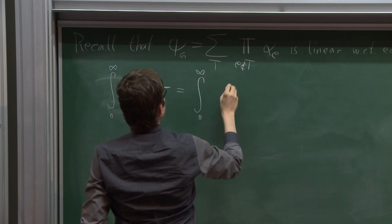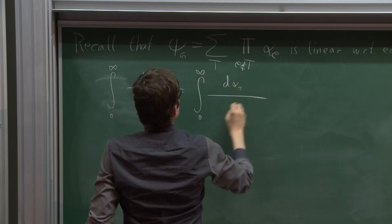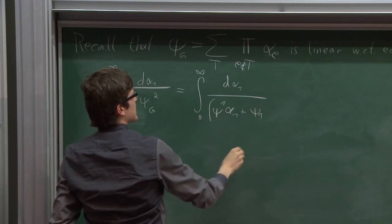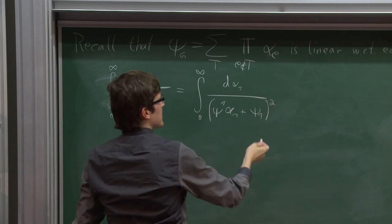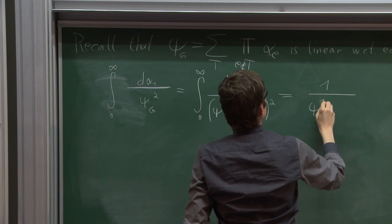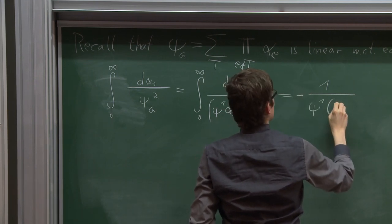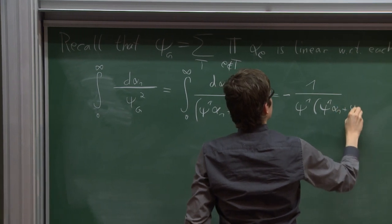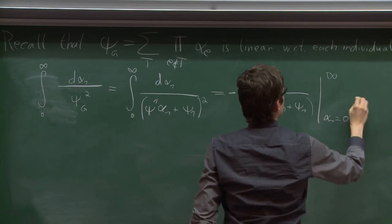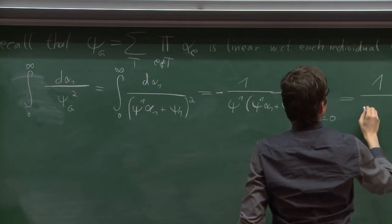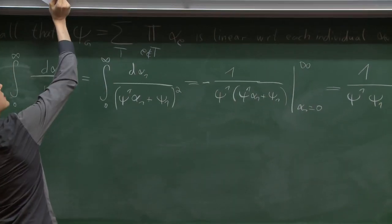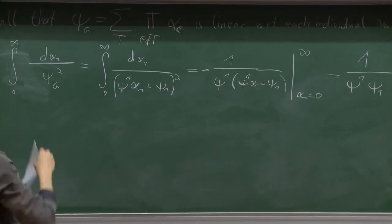Let's do the first integral over alpha_1 from zero to infinity of 1/psi_G^2. Since psi_G is linear in alpha_1, I call psi^1 the coefficient of alpha_1 in this polynomial, and psi_1 the constant part. This integral is clearly trivial to do — we just get the primitive evaluated at zero to infinity, giving 1 over the product of psi^1 and psi_1.